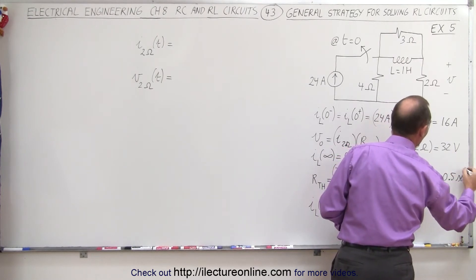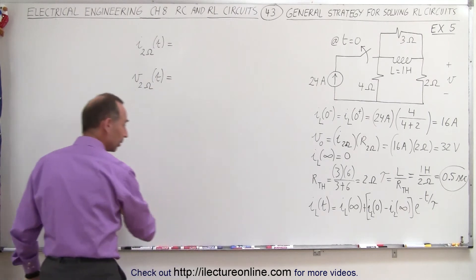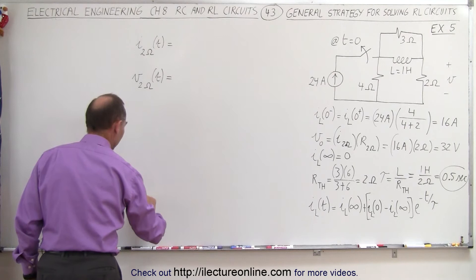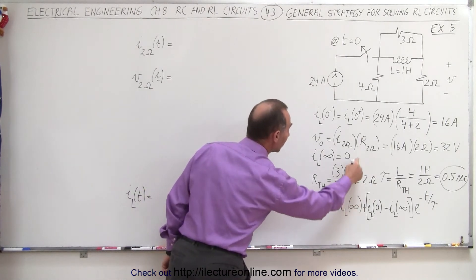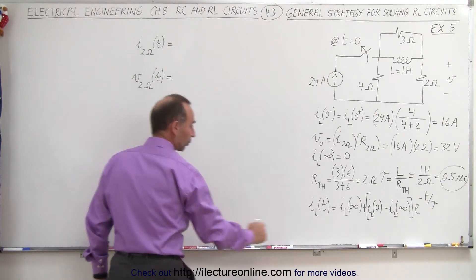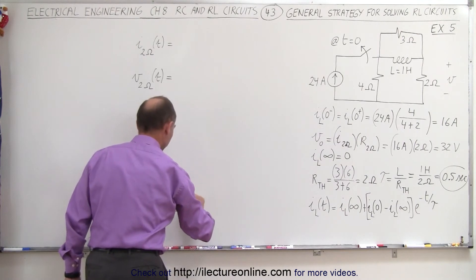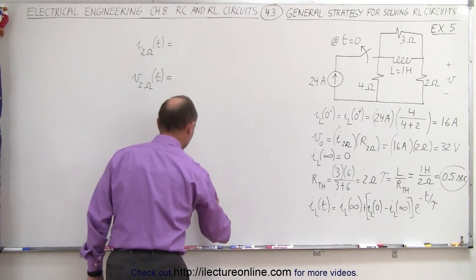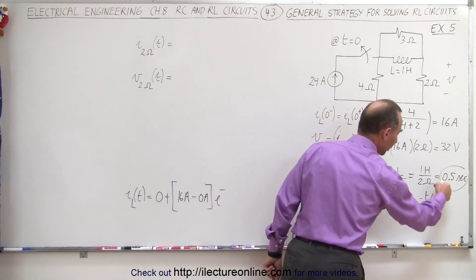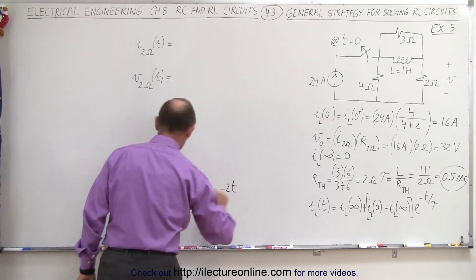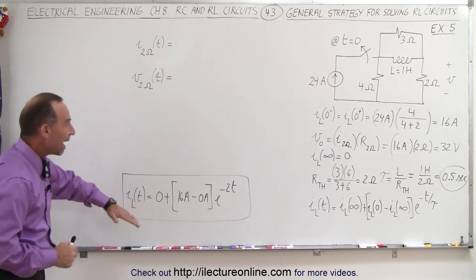So we have a time constant of one-half of a second. Now to find the current through the inductor at any time after the switch opens up: I through the inductor equals the current through the inductor at infinity, which is zero, plus the current through the inductor at time equals zero — which is 16 amps — minus the current through the inductor at infinity, which is zero, times e to the minus t over tau. Now tau is 0.5 seconds, so 1 over 0.5 is 2, giving us e to the minus 2t. So that will be the current through the inductor at any time after the switch opens.